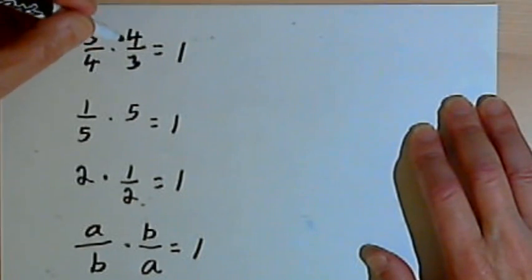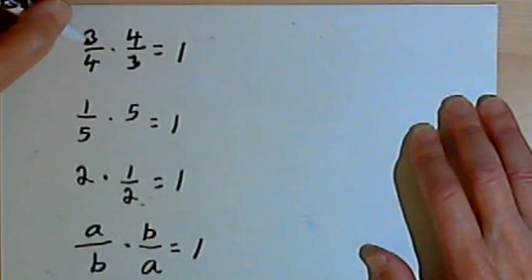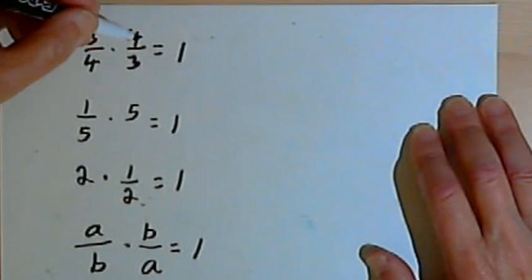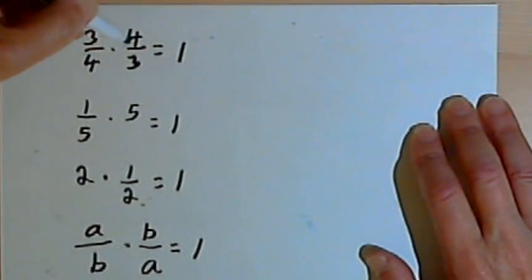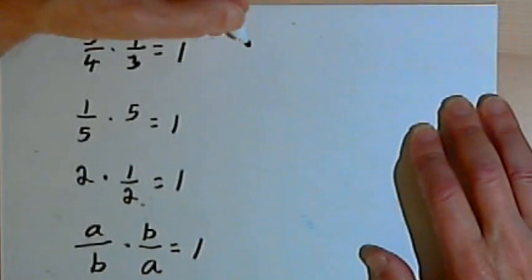To get the reciprocal, or the multiplicative inverse, all I do is take the number, the original number, like 3 over 4, and flip it over. So I take that fraction 3 over 4, flip it over, make it 4 over 3. When I multiply them out, I get a 1. Here's why I get a 1.